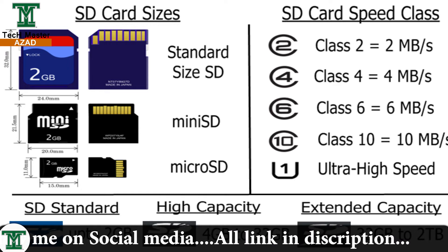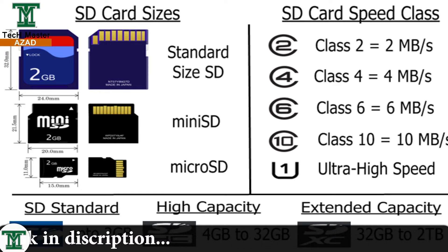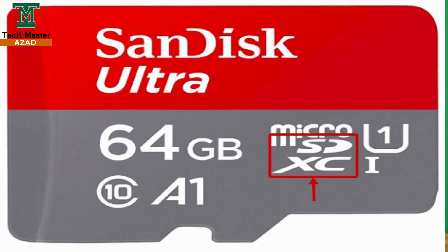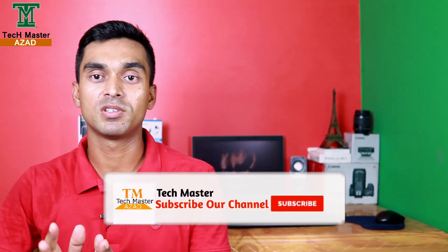Speed class on an SD card: Class 2 is 2 megabits per second, Class 4 is 4 megabits per second, Class 10 is 10 megabits per second. This is the U1, U2, U3 ultra speed standard, supporting high speed for cameras including MacBook and window cameras used for 2K and 4K video shooting.